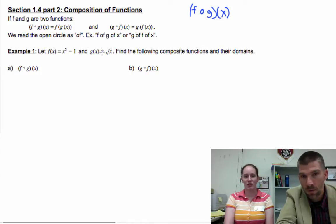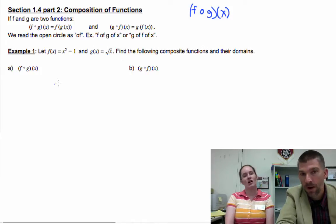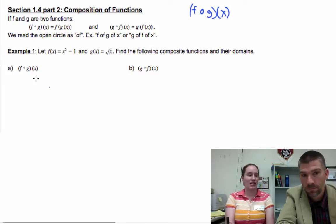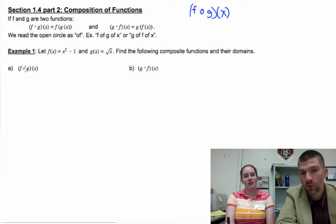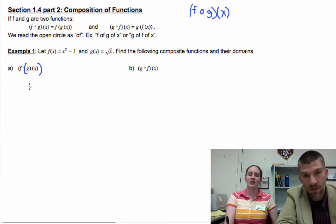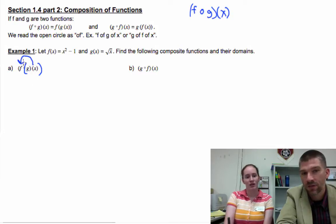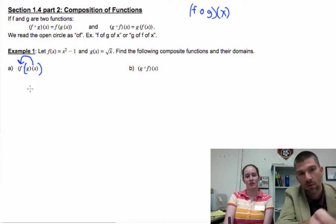Let's give it a try. Let f(x) = x² - 1 and g(x) = √x. Find the following composite functions and their domains. We already have restrictions. Let's find it first and then let's talk about the restrictions.